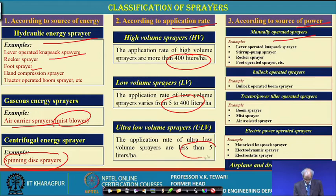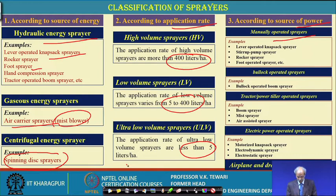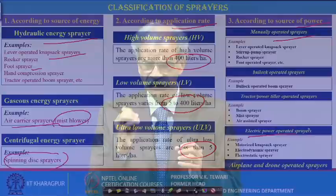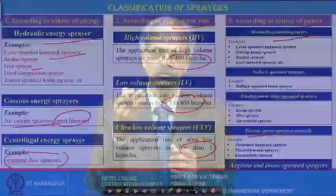On the basis of application rate and source of power, you can say manually operated, animal energy, and then power — whether you use a tractor, power tiller, or electrical motors. Many of the devices coming on electrical power use electrostatic principles — the particles are actually charged, so when the negative charge is on the plant, they go and get deposited. Their deposition efficiency is very high and the effectiveness of the chemical is very high with electrostatic charged particles. It was started long back and now has come back with several modifications.